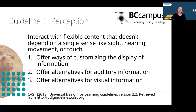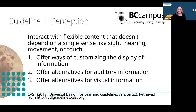The first guideline is perception, which has to do with providing options for students to interact with content that doesn't rely on a single sense, like sight, hearing, movement or touch. Many of these things closely relate to web content accessibility guidelines. However, a key aspect of the perception guideline is user choice and the ability to customize. This includes offering ways to customize the display of information like changing the size and spacing of images and text, changing colors and increasing color contrast, adjusting the speed of audio in recordings or text to speech tools, and changing font. These are all things generally possible for digital content, depending on the platform.